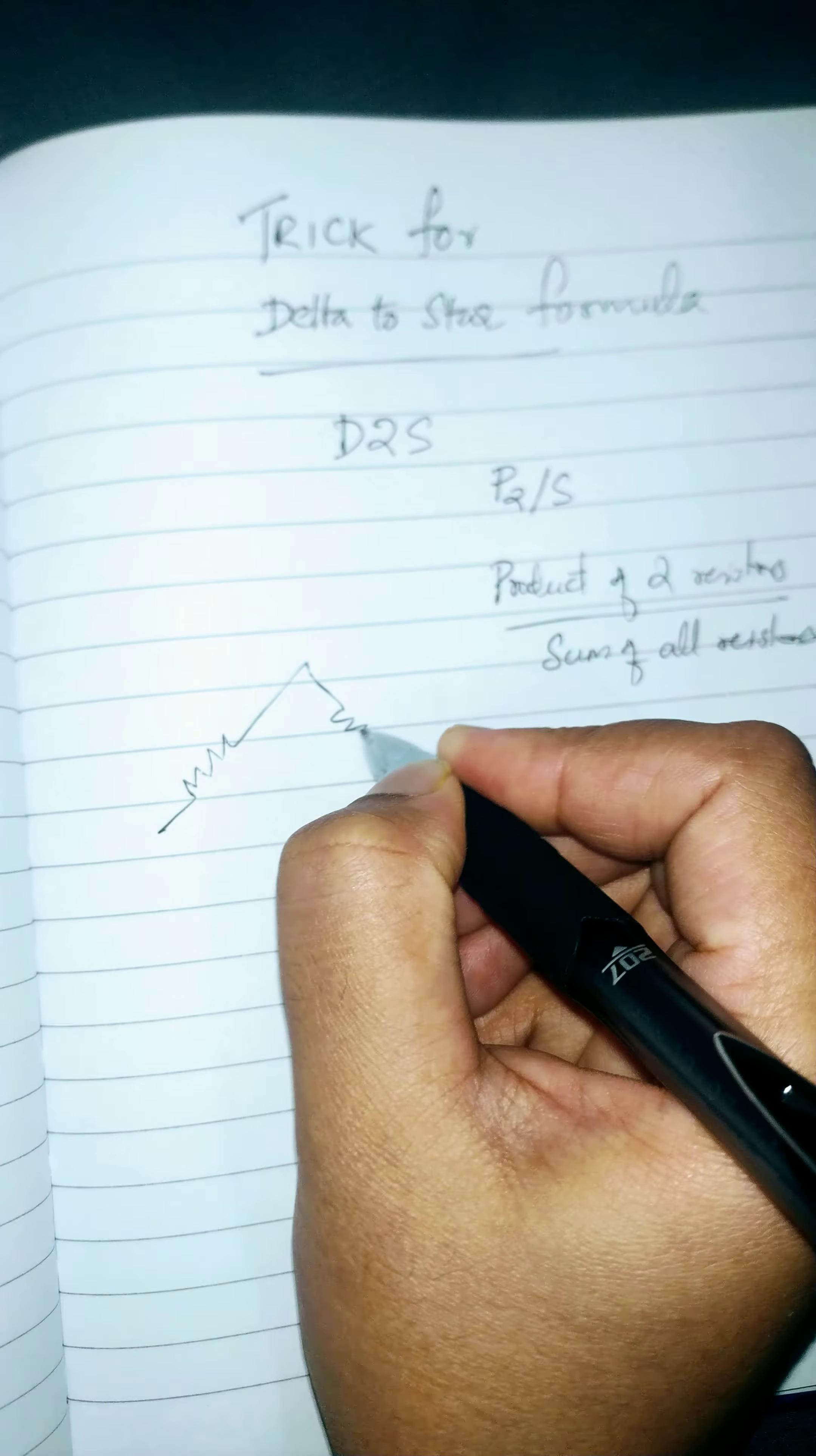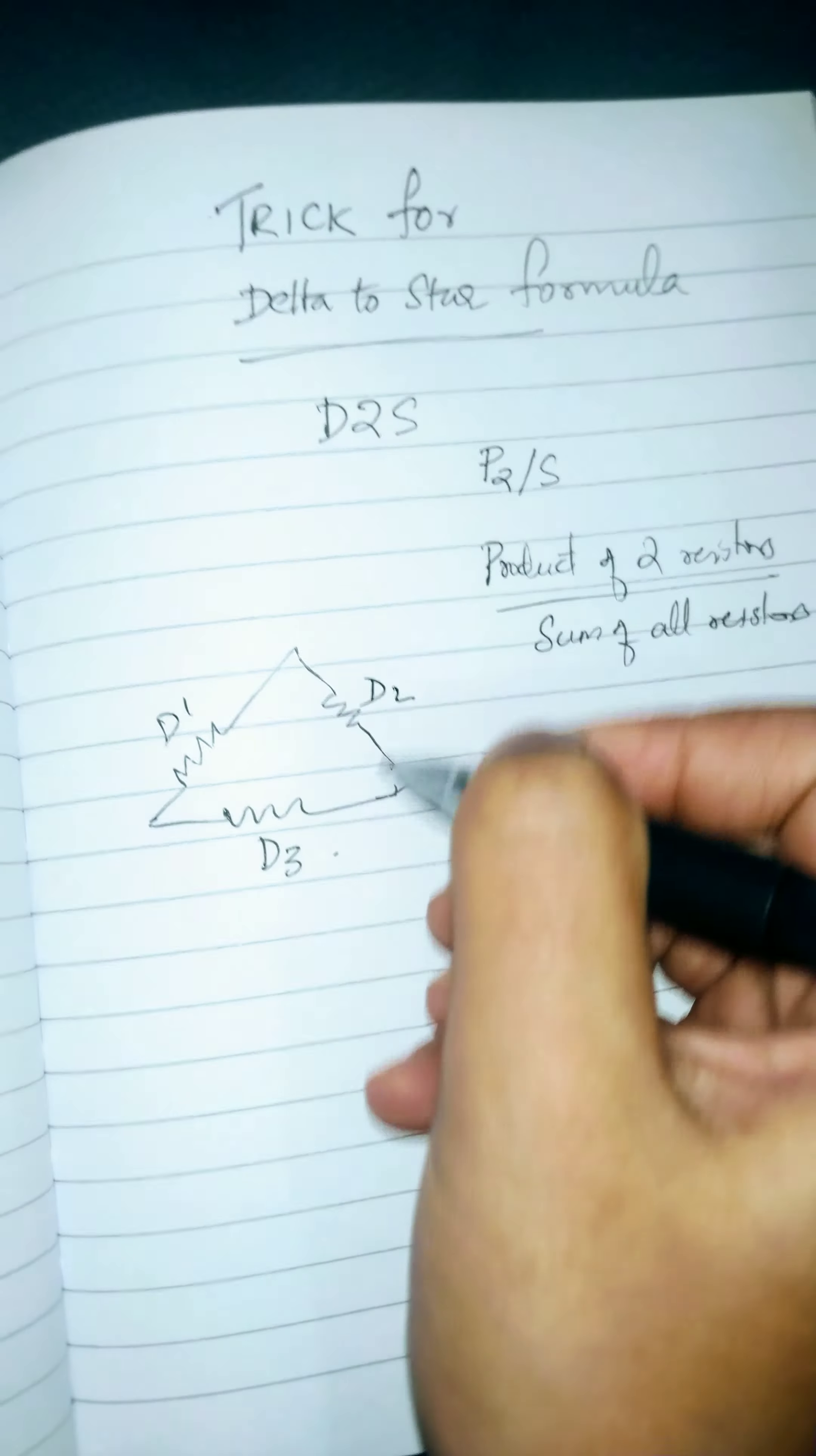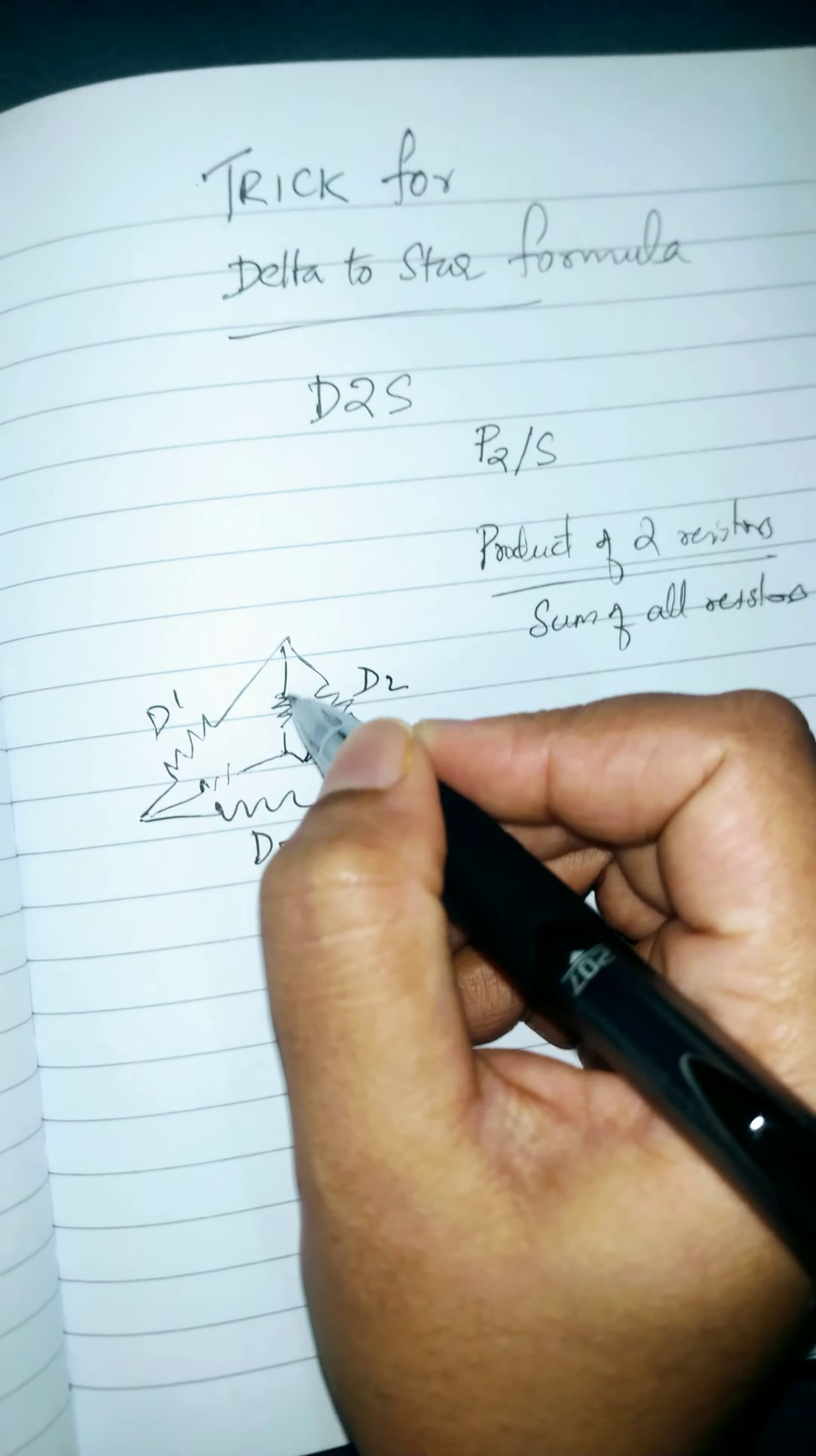Now you will be given with a delta connection. So this is your delta connection - D1, D2, D3 are the resistors you are given with. Now you have to get the corresponding star connected values.